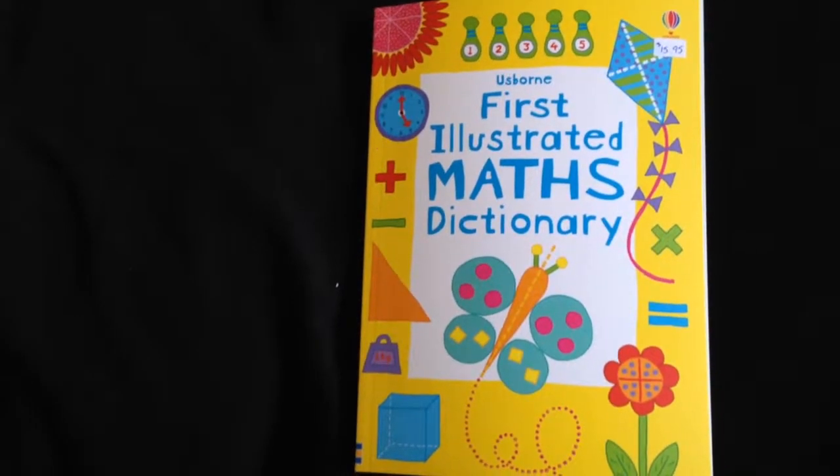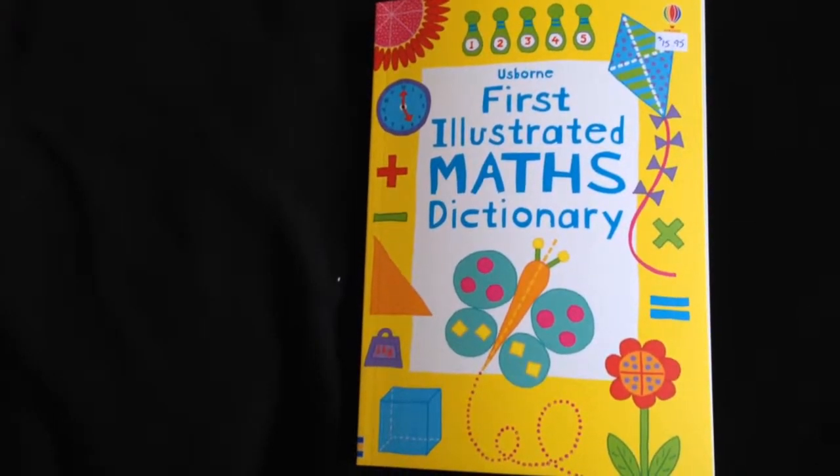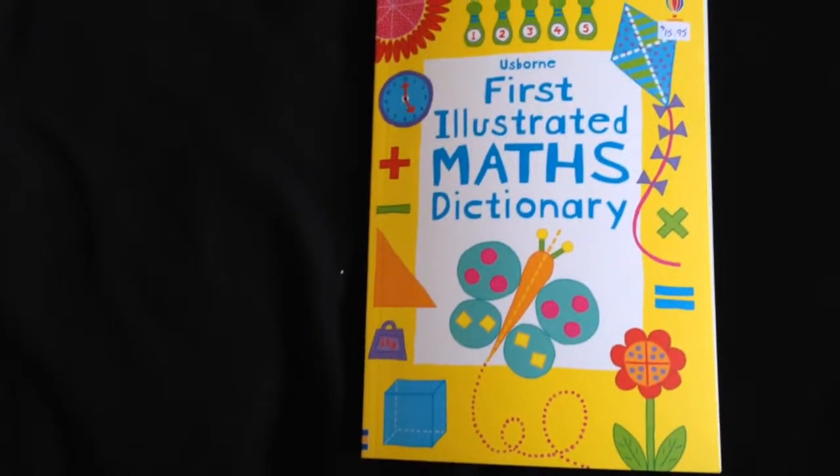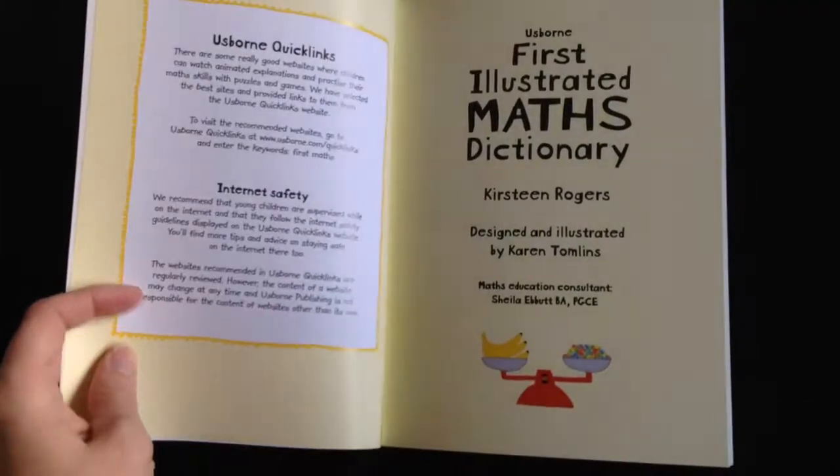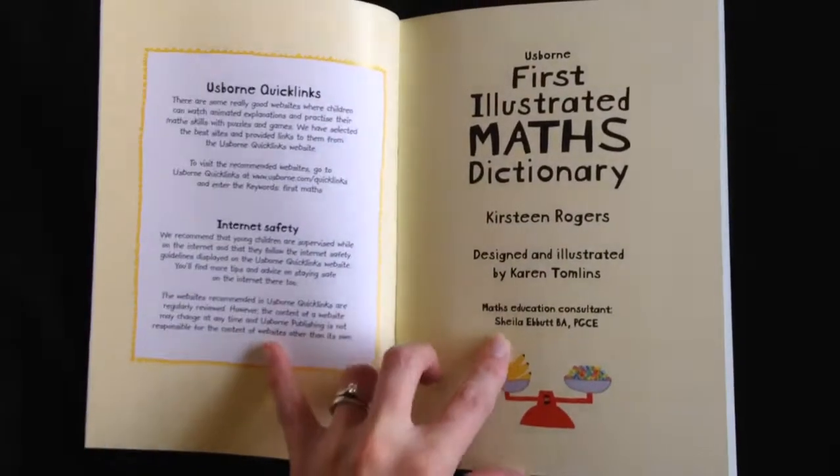Good morning. Here's a quick overview of the Usborne First Illustrated Maths Dictionary. It's $15.95. It's a really neat book. It basically works you through all the beginner math concepts.